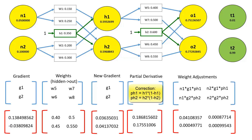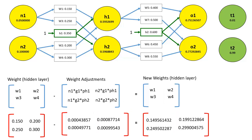Finally, we can calculate the weight adjustments for neurons W1 through W4. For the first row, we're multiplying the first of our new gradient values with the first of our partial derivative values for hidden neuron 1, and then multiplying the result with our input vector N1. We do the same again for the second row using N2. Now let's adjust our weights W1 through W4 with the new adjustments. Again, you'll see that the values we get are the same as those previously reviewed. So allowing for some calculation rounding, our results are confirmed here.